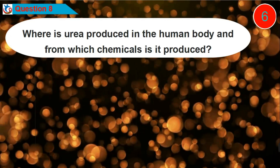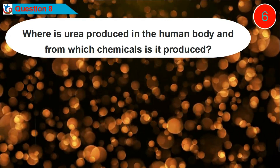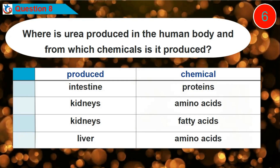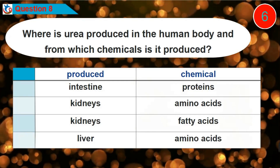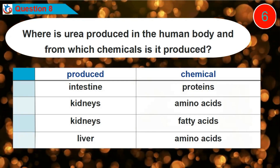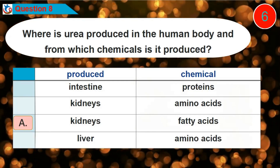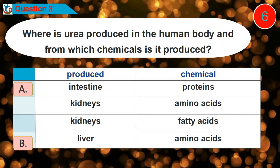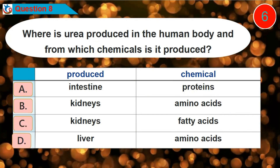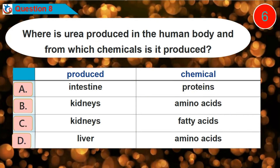Question 8. Where is urea produced in the human body and from which chemicals is it produced? Is it option A, B, C, or D?